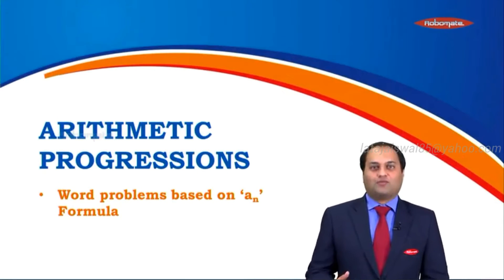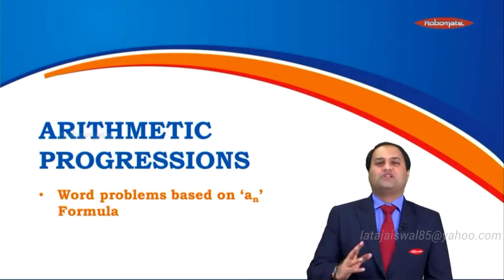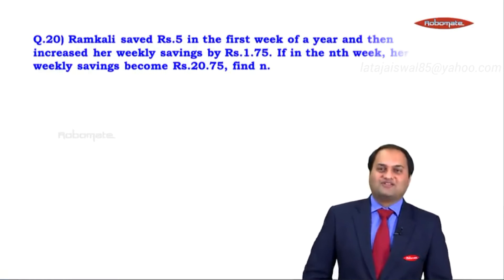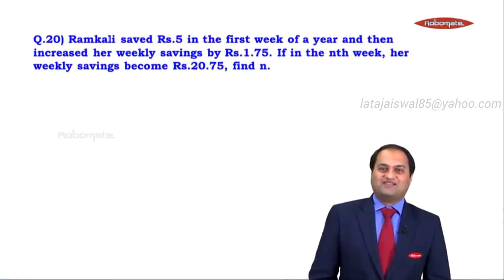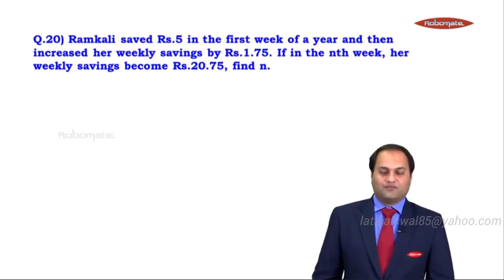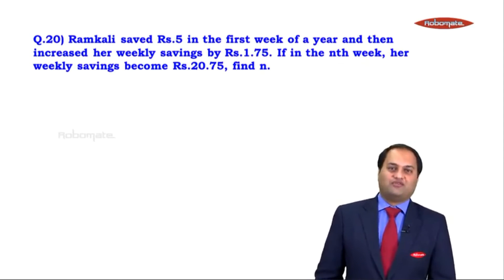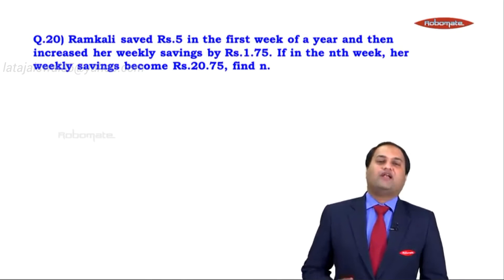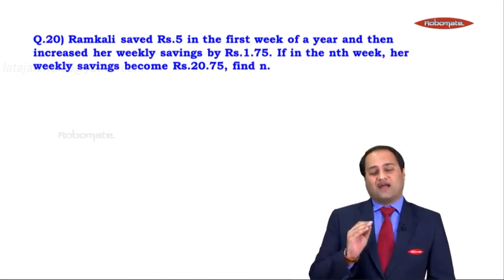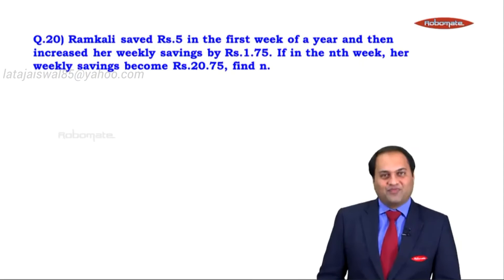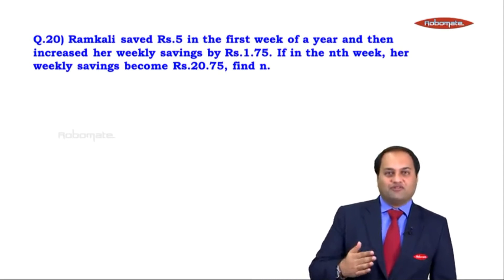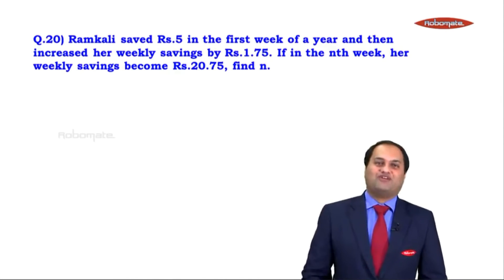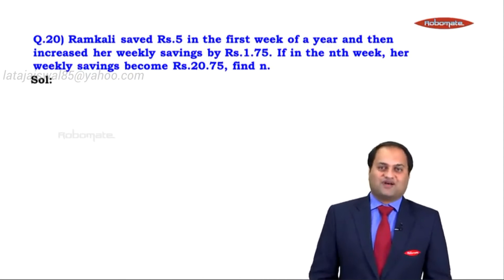Let's move on to the next module — another word problem based on the AN formula, and it is absolutely similar to the word problem we saw in the previous module. The sum is: Ramkali saved rupees 5 in the first week of a year and then increased her weekly savings by rupees 1.75. If in the nth week her weekly savings become rupees 20.75, find n. This sum is very similar to the previous one about salary increments.